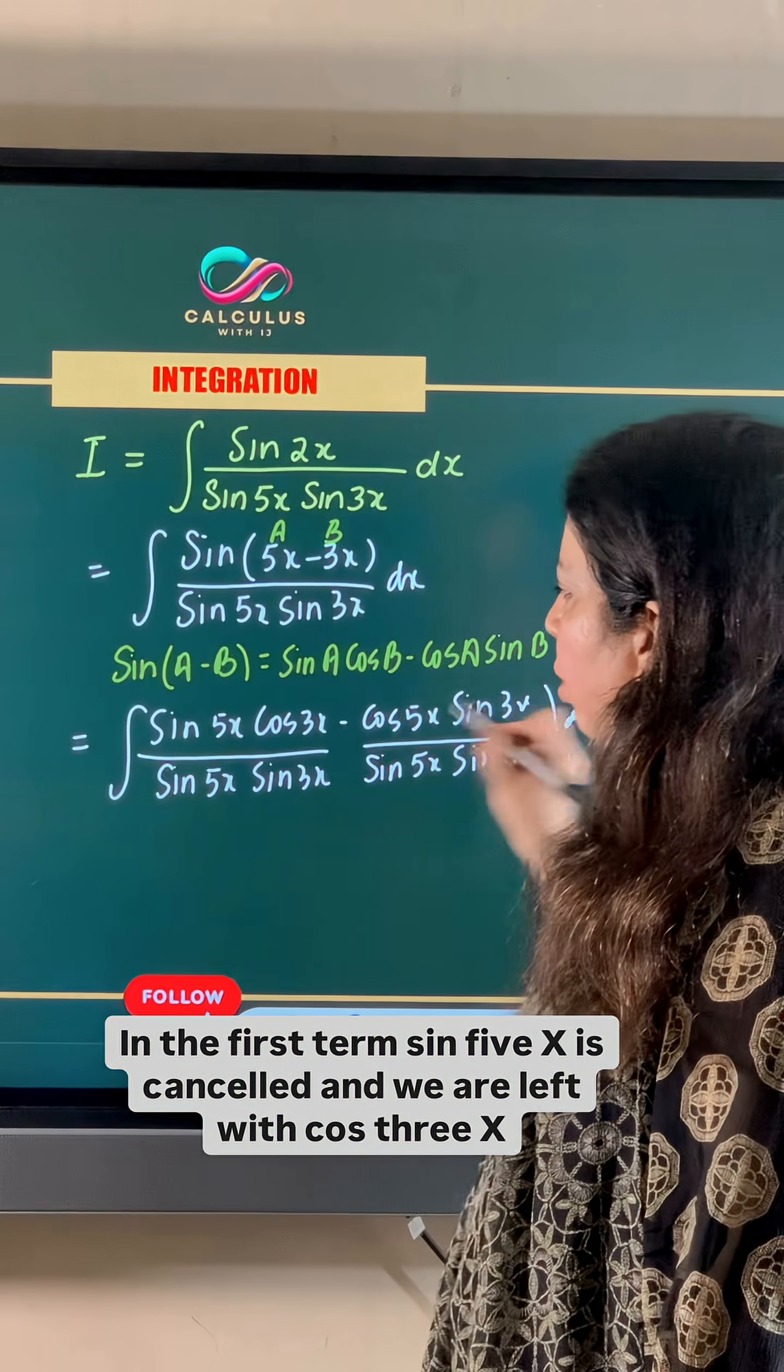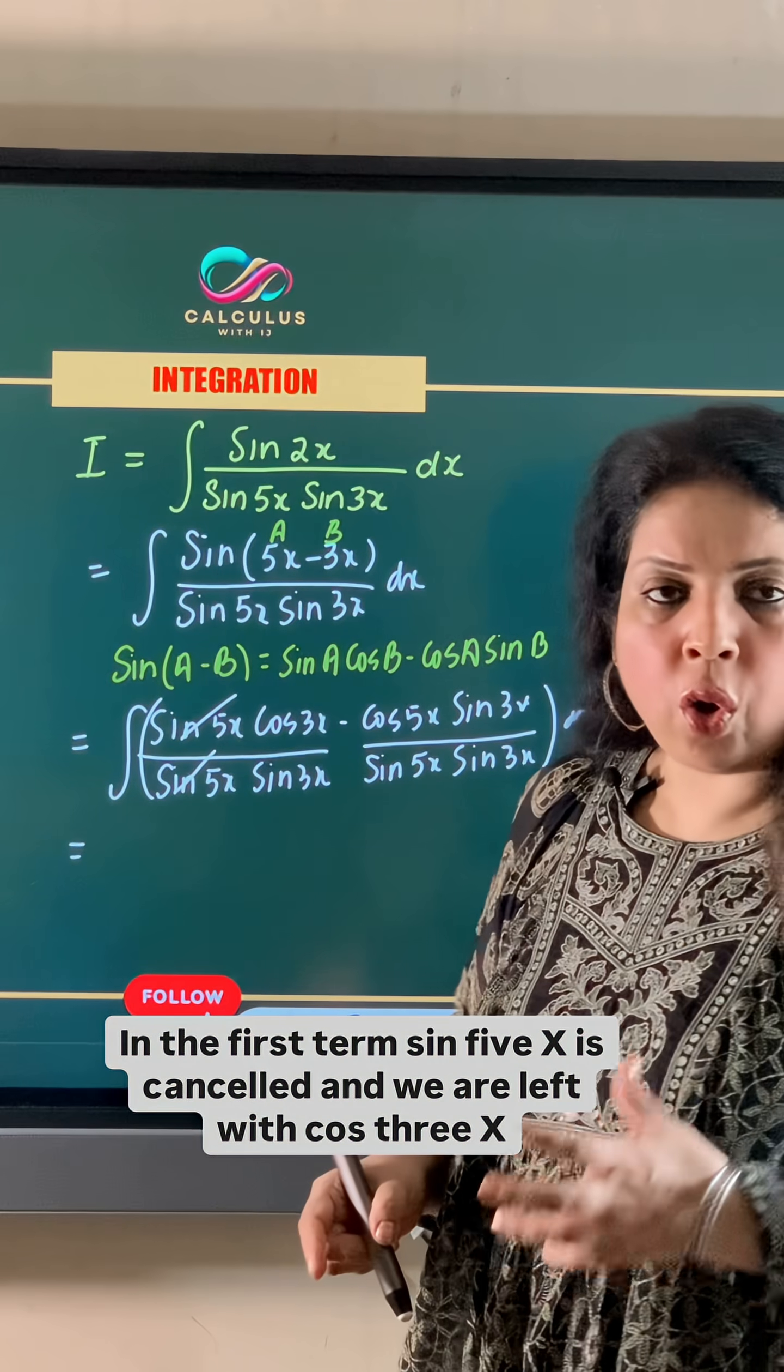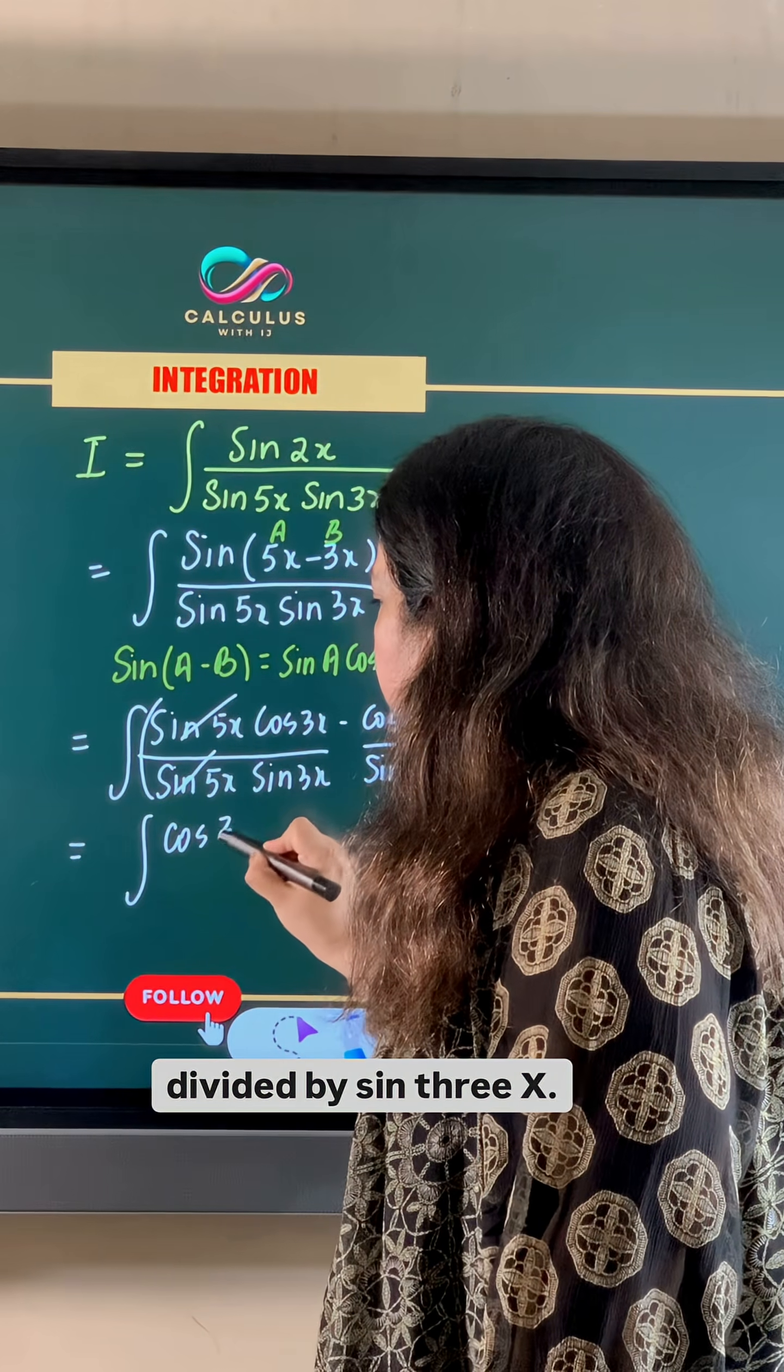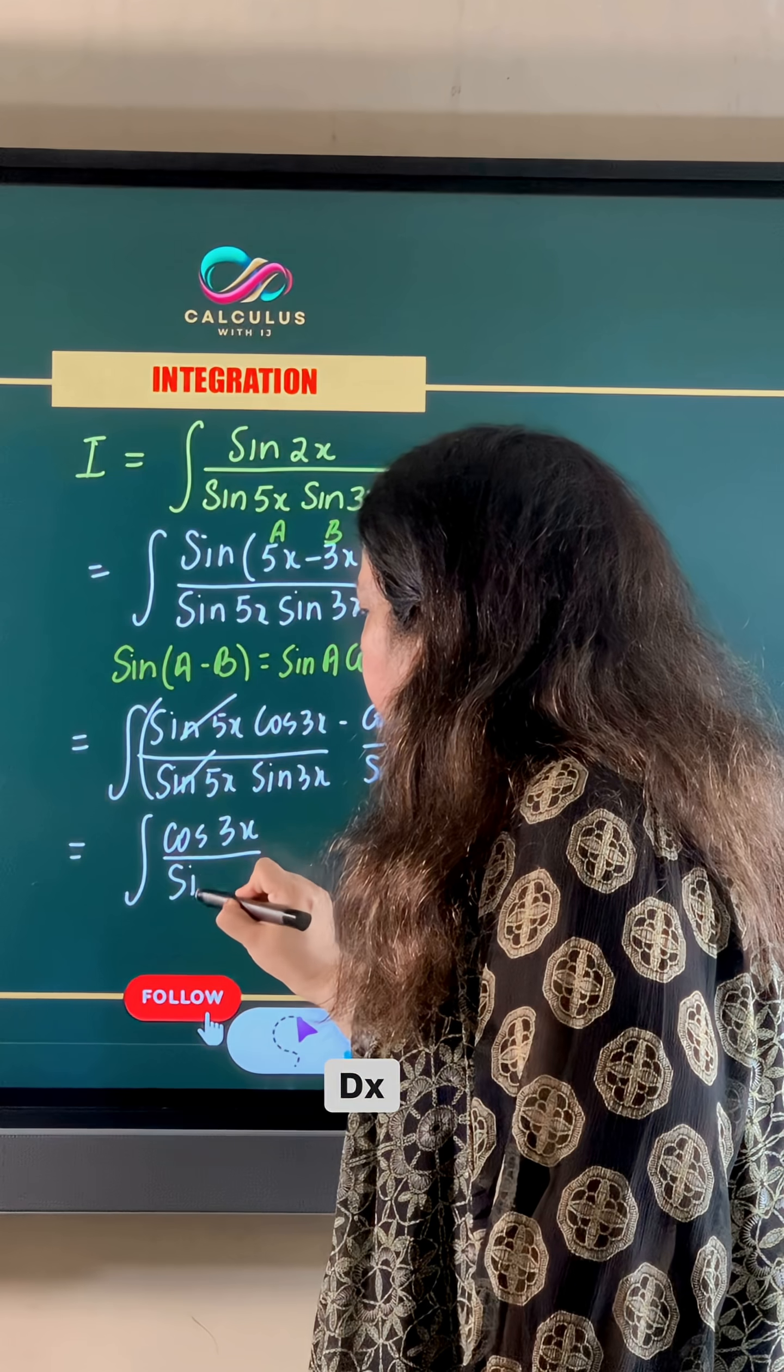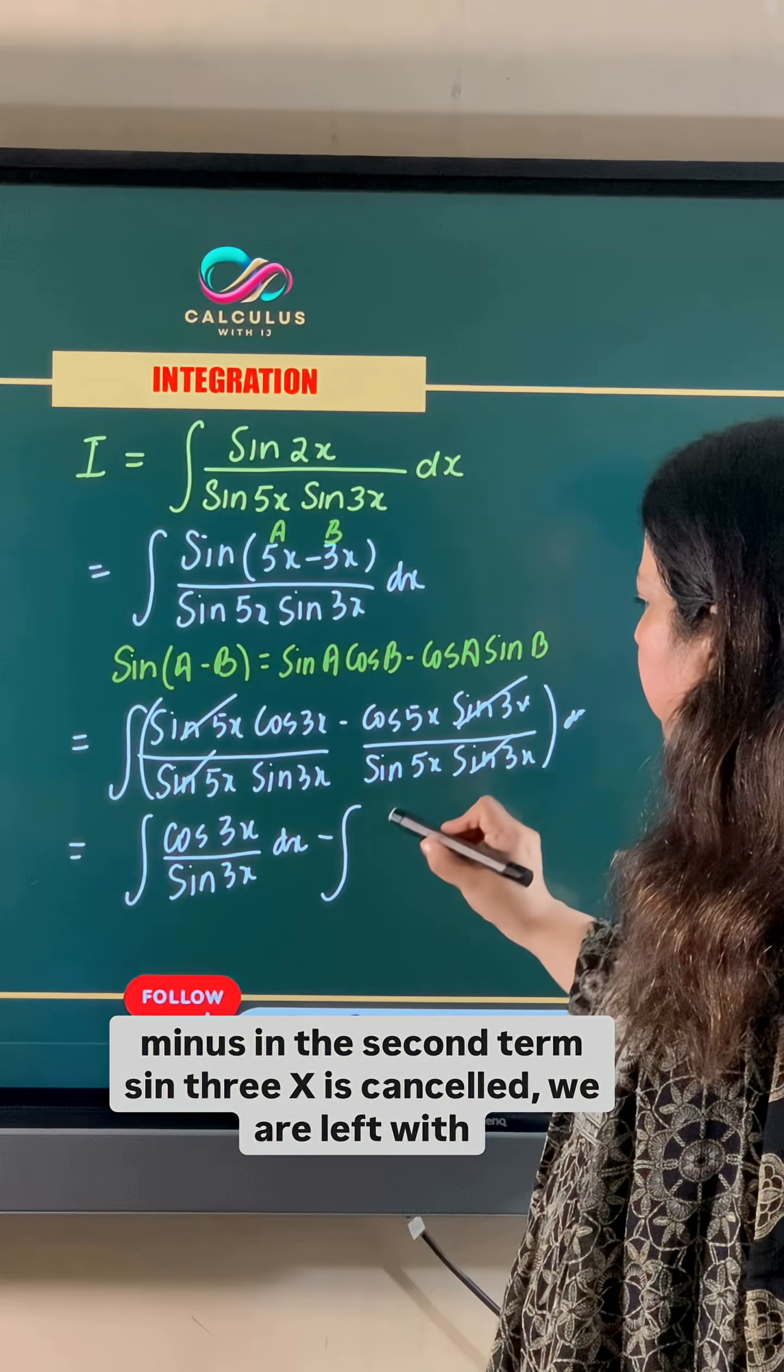In the first term, sin 5x is cancelled and we are left with cos 3x divided by sin 3x dx. In the second term, sin 3x is cancelled.